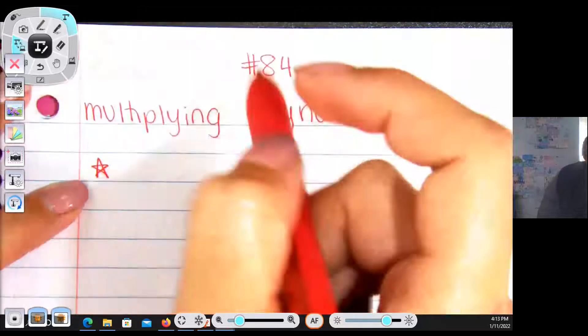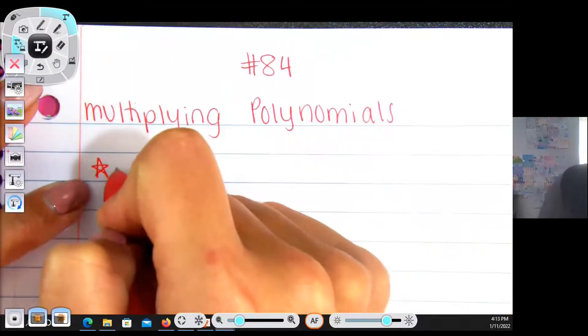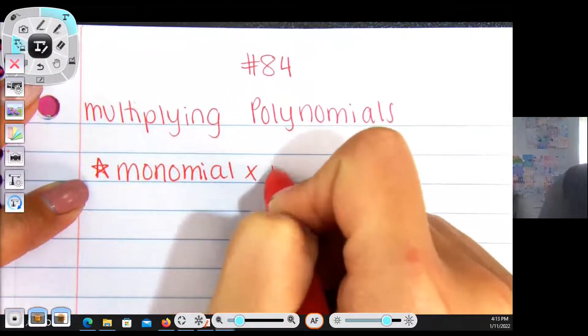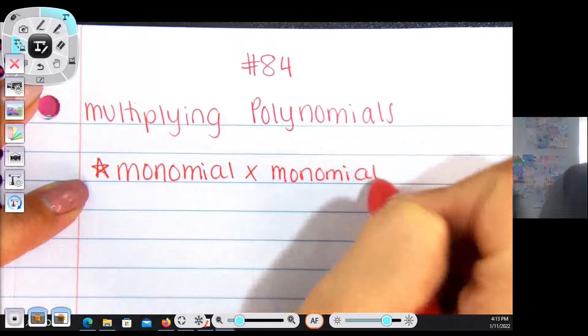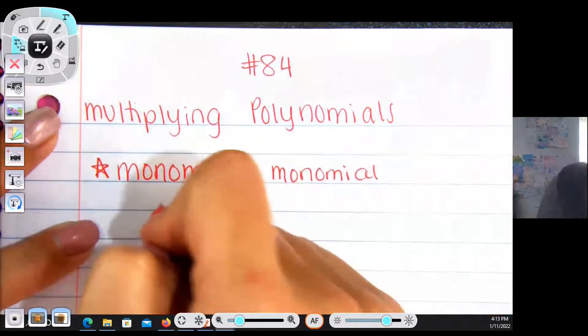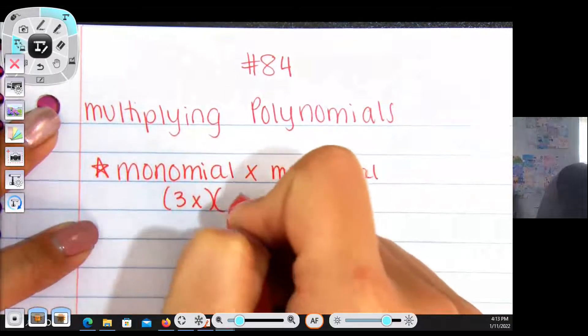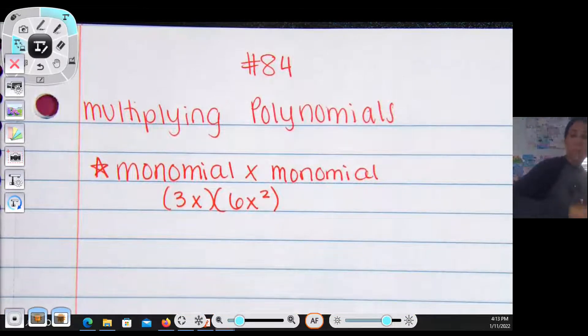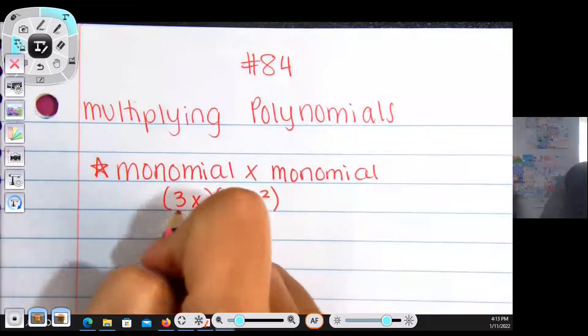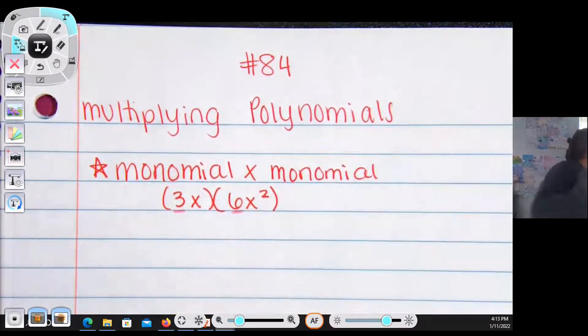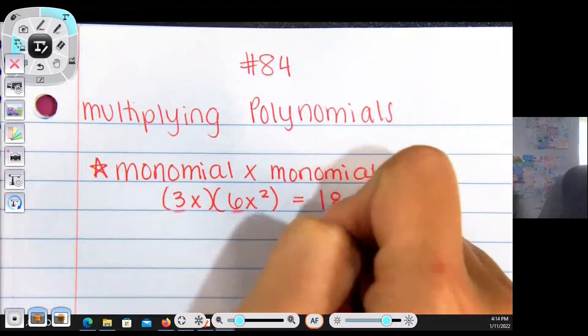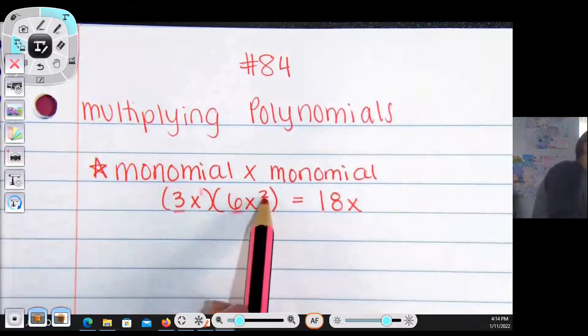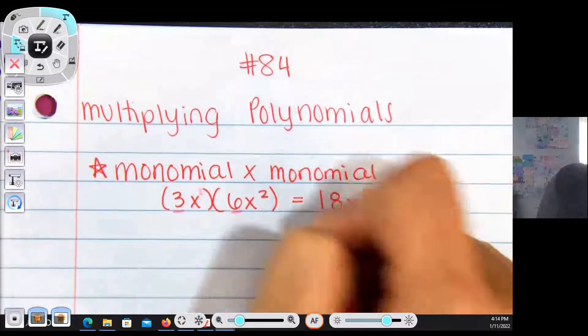The first types of polynomials we're going to do is a monomial times a monomial, which is super easy. A monomial means a one term polynomial, so this would be like 3x multiplied by 6x². This is really just basic math using properties of exponents. I'm going to multiply the coefficients, which is 3 and 6. 3 and 6 are going to give me 18. I keep the variable and figure out my exponents and add them together. 1 plus 2 is going to give me 3 and that's my answer.